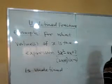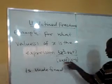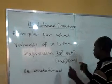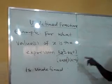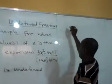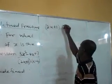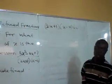I've told you that this expression will be undefined when the denominator is equal to 0. So what that means is that we are going to equate this denominator to 0. Go ahead and say 2x plus 1 into x minus 4 equals to 0.